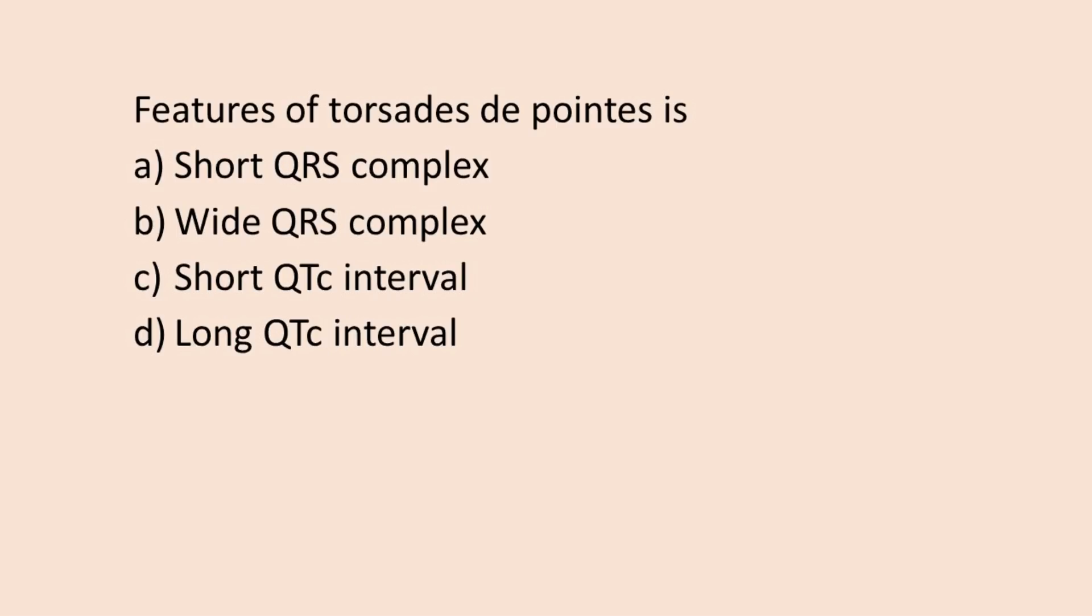Thank you very much. Let's solve this question. Features of torsades de pointes is: Option A, short QRS complex; Option B, wide QRS complex; Option C, short QT-C interval; Option D, long QT-C interval. Yeah, that's it guys.